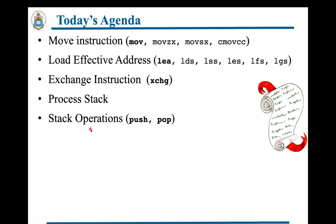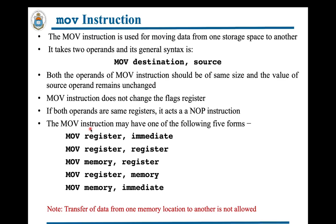The MOV instruction is used for moving data from one storage space to another. The first operand is the destination and the second is the source; both must be of the same size. The source operand remains unchanged after the operation. A MOV instruction does not change the flags register, and if both source and destination are the same register, it acts as a NOP instruction.